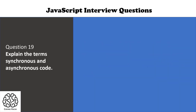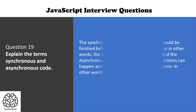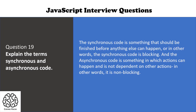The next question is: explain the terms synchronous and asynchronous code. Synchronous code must be finished before anything else can happen — in other words, synchronous code is blocking. Asynchronous code is something in which actions can happen independently of other actions — in other words, asynchronous code is non-blocking.